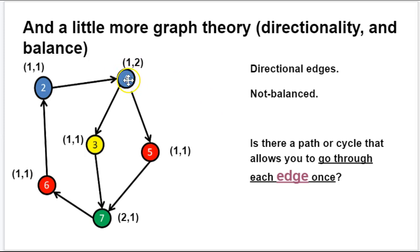This number four node has one edge coming into it, hence the one here, and it has two edges coming out of it, hence the two here. That is an unbalanced node. This one over here, number two, has one edge coming in and one going out. It's a 1-1. This is a balanced node. Because this overall graph includes quite a few nodes that are not balanced, it's considered an unbalanced graph.